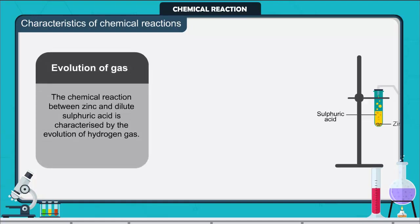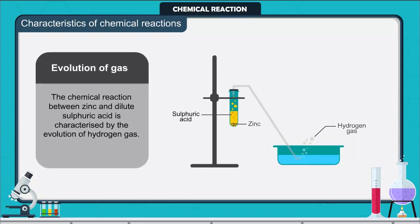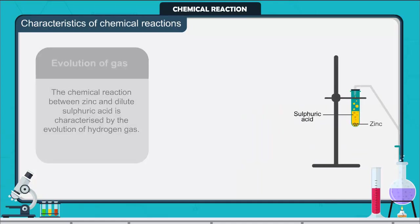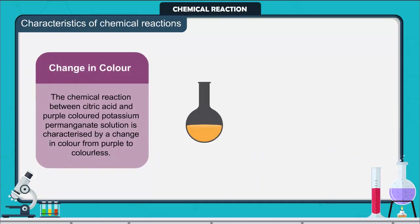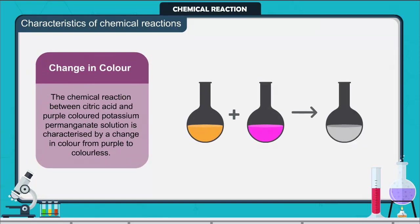Evolution of gas: The chemical reaction between zinc and dilute sulfuric acid is characterized by the evolution of hydrogen gas. Change in color: The chemical reaction between citric acid and purple-colored potassium permanganate solution is characterized by a change in color from purple to colorless.